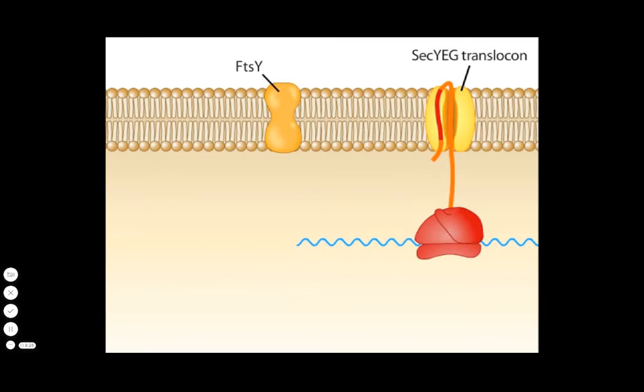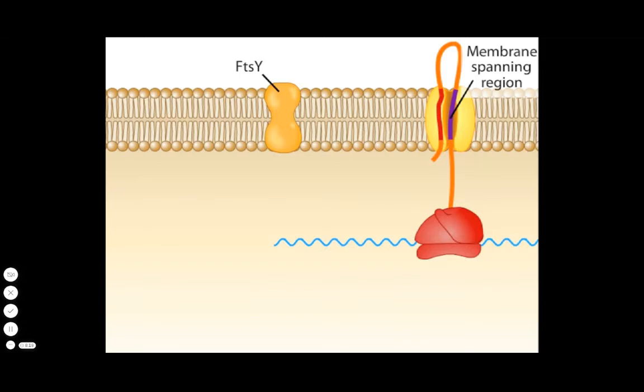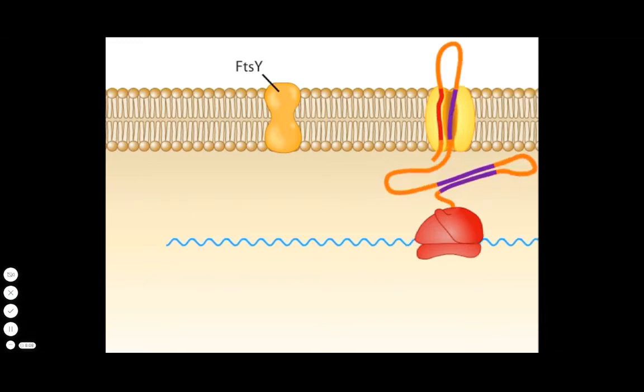The newly made membrane protein may have many membrane-spanning regions. These hydrophobic regions, 20 to 25 amino acids in length, are important because they're compatible with the hydrophobicity of the membrane itself. The hydrophobic regions move laterally out of the complex and into the membrane.